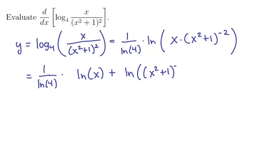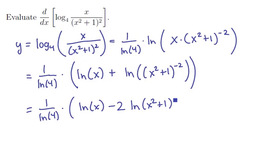And remember this is a giant, there's parentheses around this expression, it's a giant sum. I can also pull that 2 out using the other rule of logarithms. So I have 1 over ln of 4 times ln of x minus 2 times ln of x squared plus 1 as a quantity.